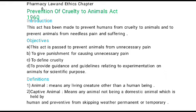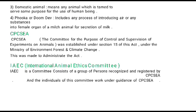Definitions: First, animal means any living creature other than a human being. Second, captive animal means any animal not being a domestic animal which is held by humans and prevented from escaping, whether permanently or temporarily. Third, domestic animal means any animal which is tamed to serve some purpose for the use of human beings.